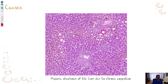Here you can see the hyperemia — the liver sinusoids are congested with many erythrocytes — and there is also steatosis as a consequence of chronic hypoxia.